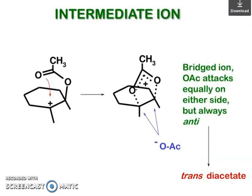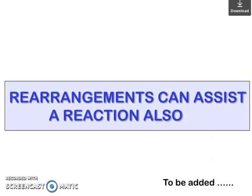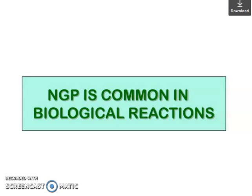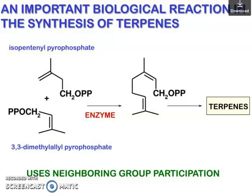The intermediate here is a bridged ion. The acetate attacks equally on either side but always from the opposite face, giving trans-diacetate. So rearrangement can assist a reaction. NGP (neighboring group participation) is common in biological reactions. An important biological reaction is the synthesis of terpenes. Isopentenyl pyrophosphate (CH₂OPP with a double bond) reacts with 3,3-dimethylallyl pyrophosphate in the presence of an enzyme to give terpene products, using neighboring group participation.